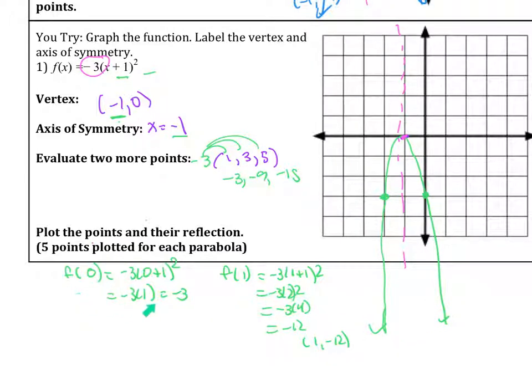If you have to plug in values to find those numbers, then I plugged in 0, which is right next to the vertex, and when I plugged in 0, I would get negative 3. Then I plugged in 1, because it's another point away from the vertex, and then I would get a negative 12. I hope this helps out. Thanks for watching.